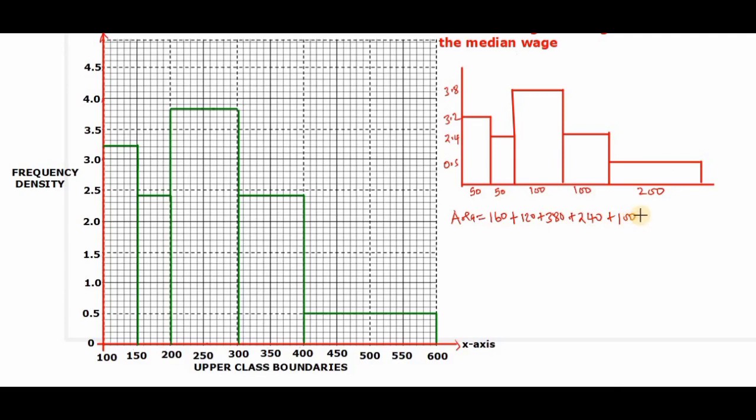So when we sum this up, it should give us 1000. So the idea here is when you get half the area of the histogram, that is half the area which is half of 1000.